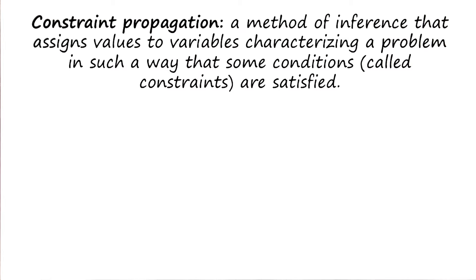This brings us to the definition of constraint propagation. Constraint propagation is a method of inference that assigns values to variables, characterizing a problem in such a way that some conditions are satisfied. If you have any problem, that problem is going to be characterized by some variables, and the task is to give specific values to each variable such that some global constraints are satisfied. Each variable may locally take on some value; the question is how can we locally assign values to variables in such a way that some global constraints are satisfied?